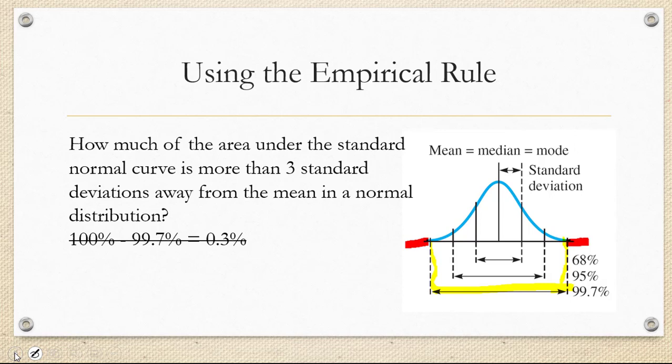So we said 100% minus the 99.7% that's within 3 standard deviations of the mean would be 0.3%. But since we're thinking of this in terms of area, we would say the one whole area minus the 0.997, the decimal form of 99.7%, is going to leave an area of 0.003, the decimal form of 0.3%.